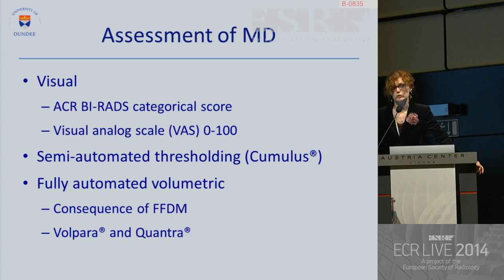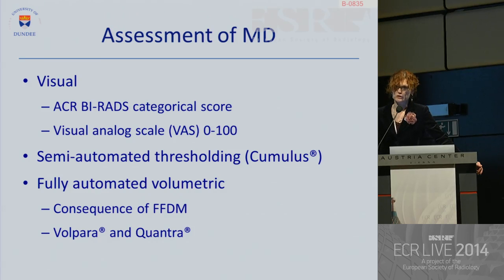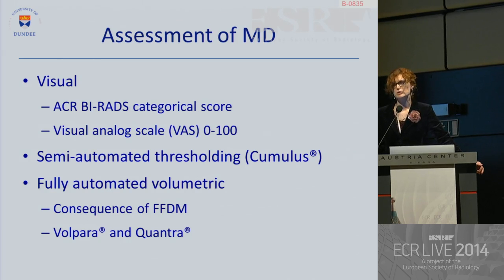The time-honored method of assessing density is visually, where the reader looks at the mammogram and makes a guesstimate as to the percent mammographic density. The most commonly used method is the American College of Radiology BIRAD score, though some centers will use a visual analog scale, where a mark is drawn on a 100-millimeter line. In the research arena, the most commonly used and well-validated tool is Cumulus, which is computerized semi-automated thresholding.